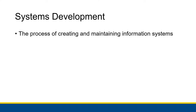Systems development is the process of creating and maintaining information systems. We'll define what maintaining an information system means later on in the chapter, but we're essentially in a situation where we either need to make a new information system, upgrade an existing one, or replace an existing one. We're going through the process of figuring out what our new information system needs to do and how we make all of that happen.